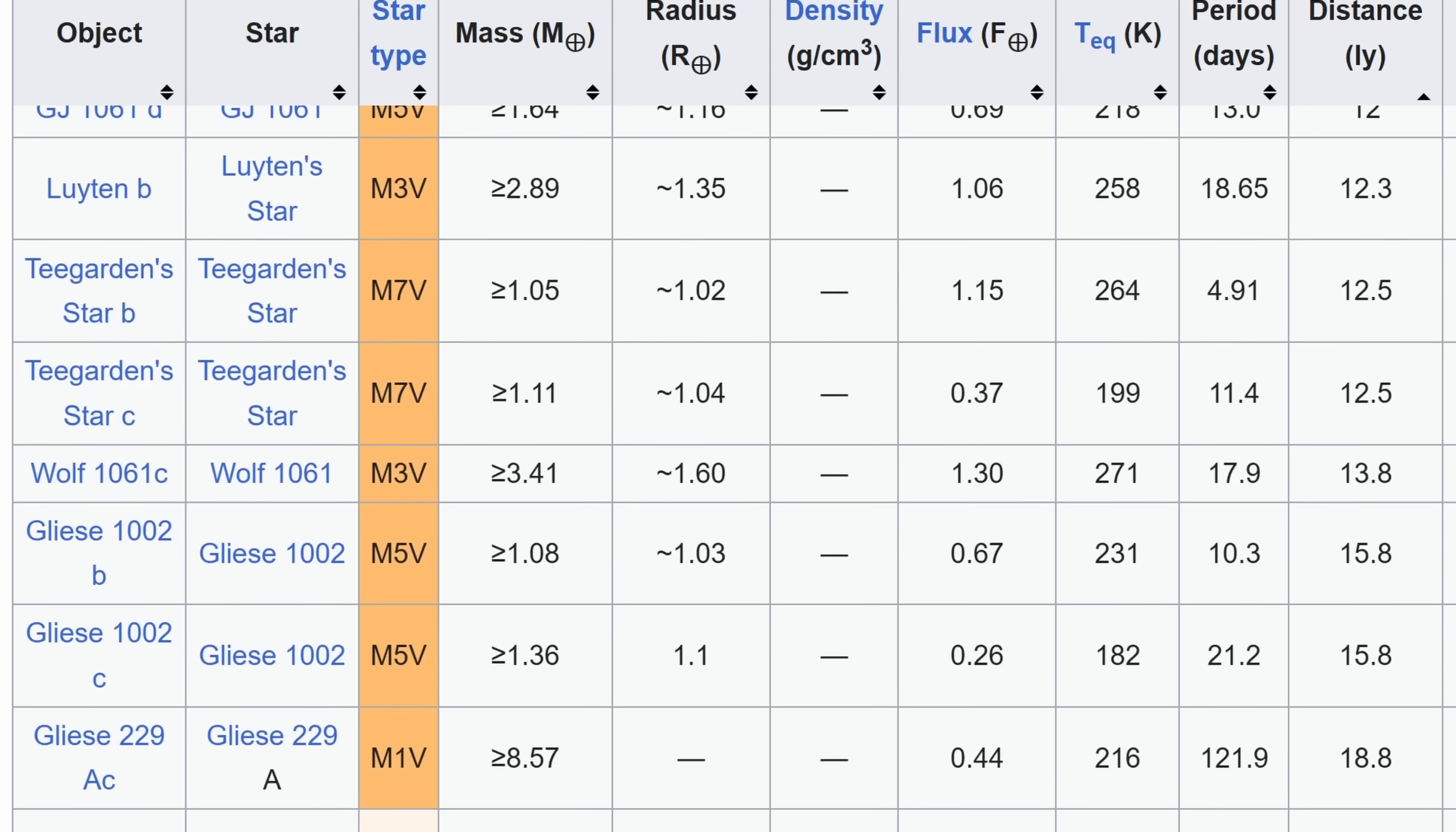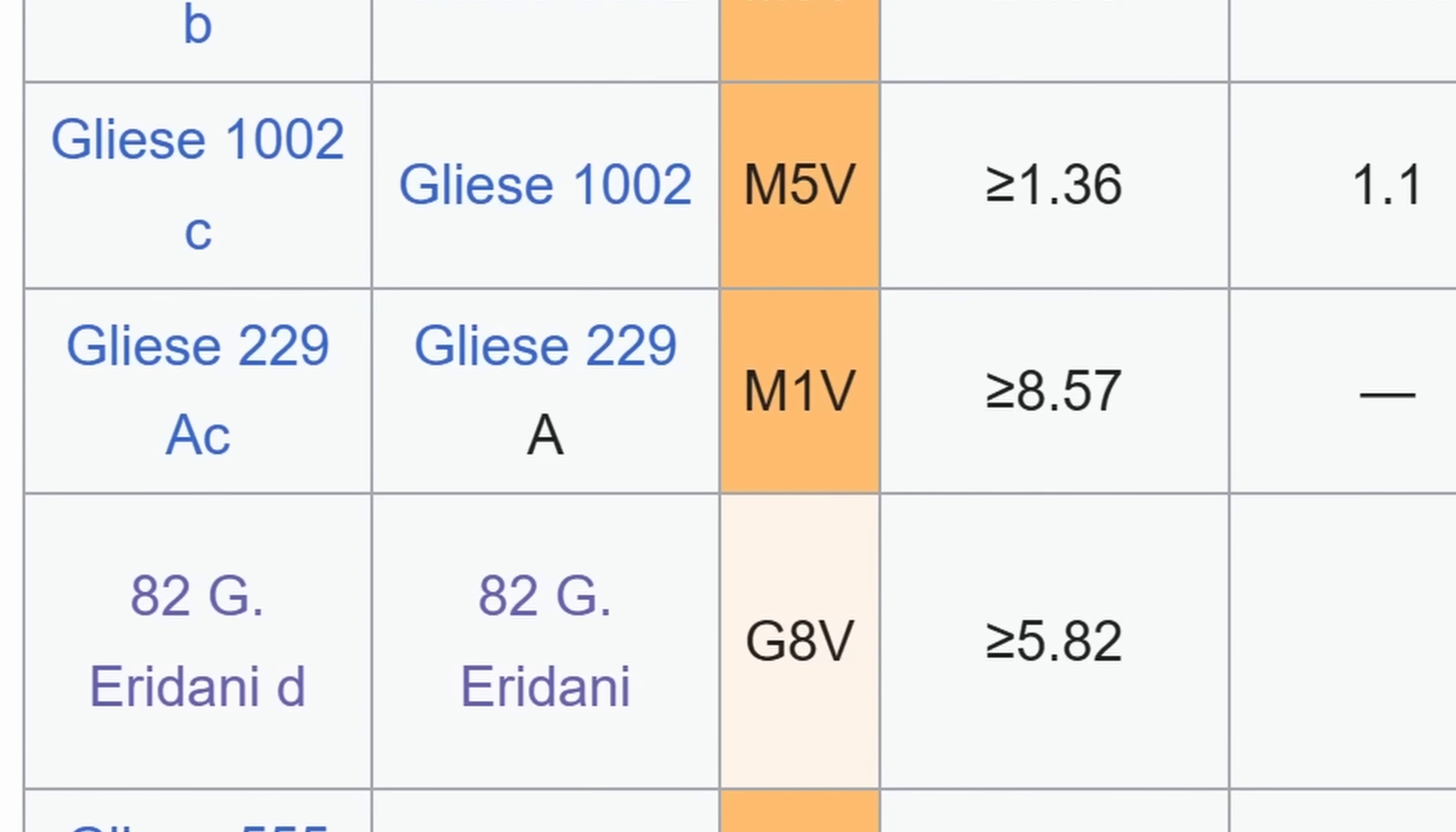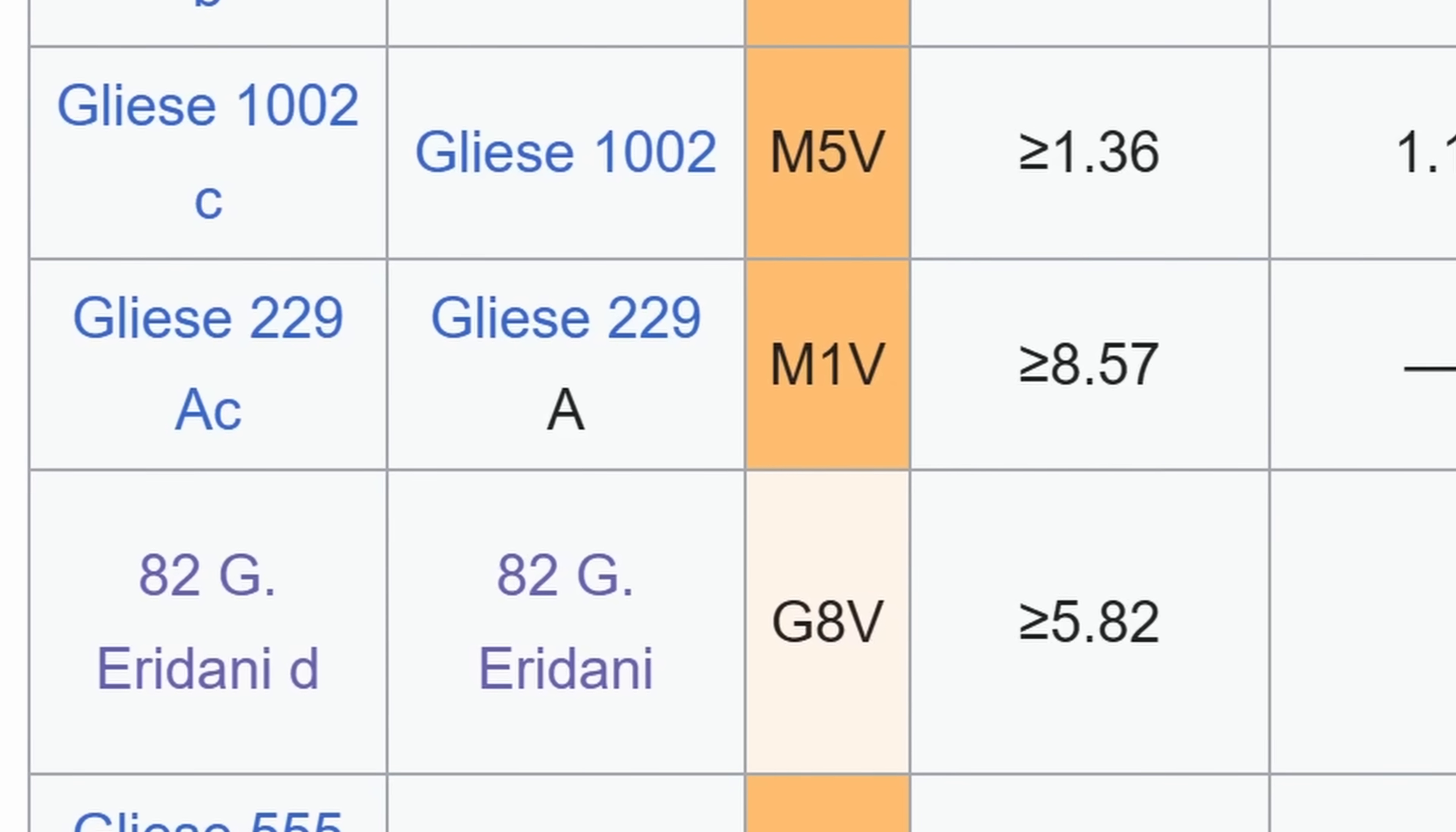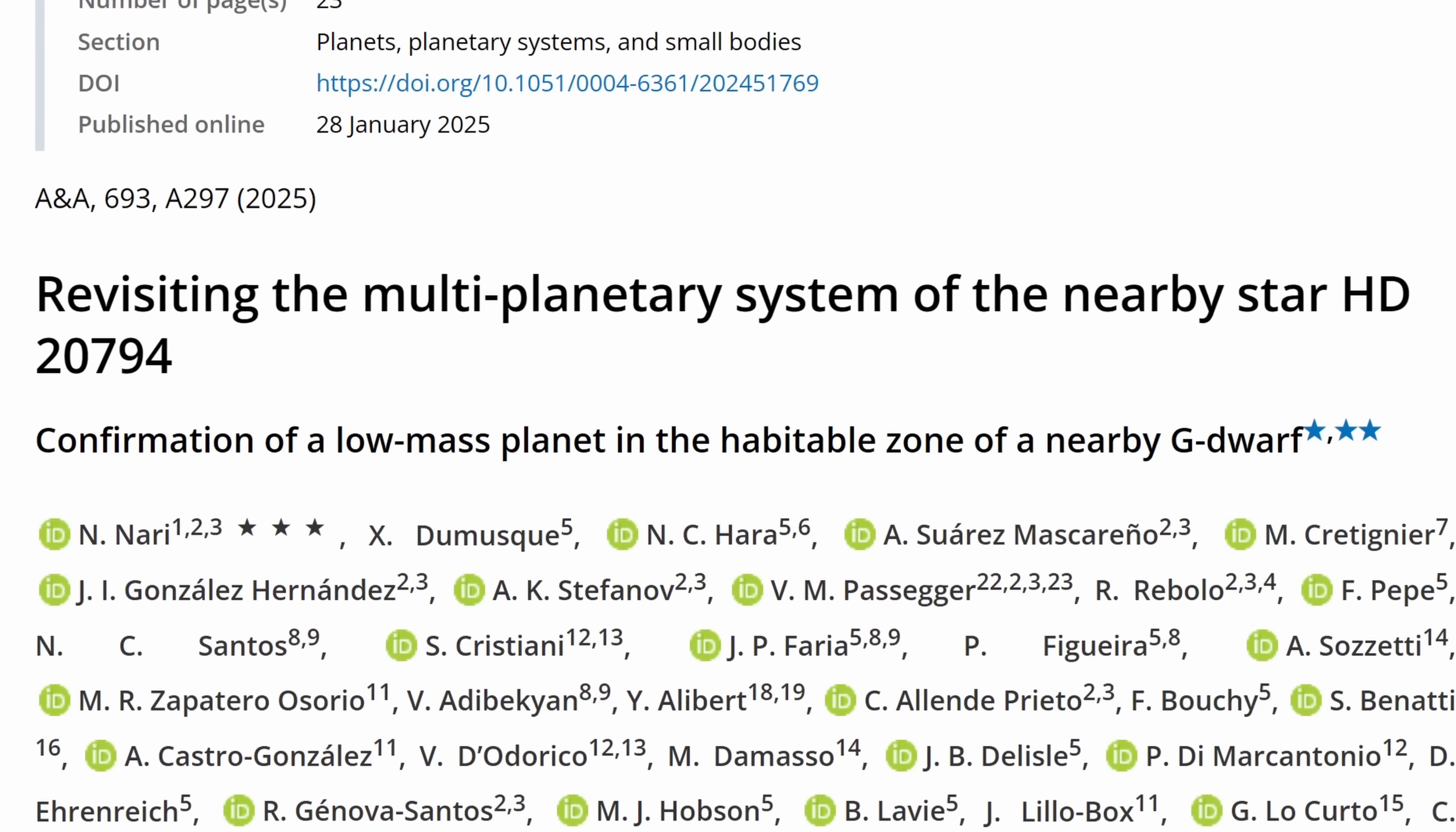But then, if you keep going down the list, there is actually one intriguing object, and it's an object you see right here, sometimes referred to as A2G-Eridani-D, but also referred to as HD-20794.